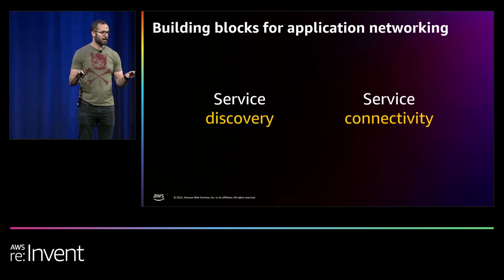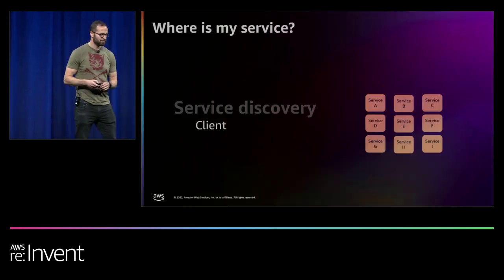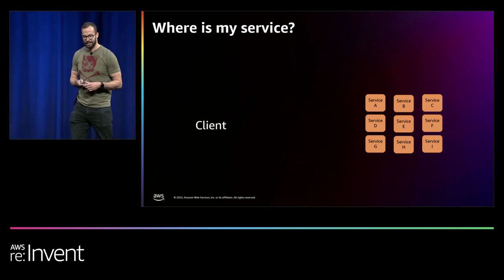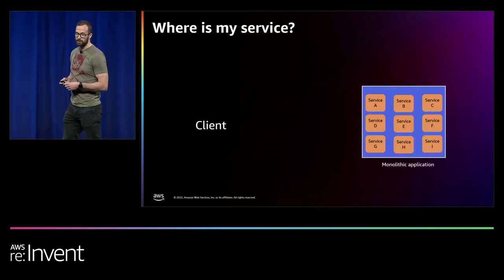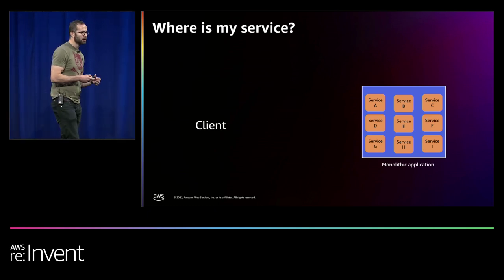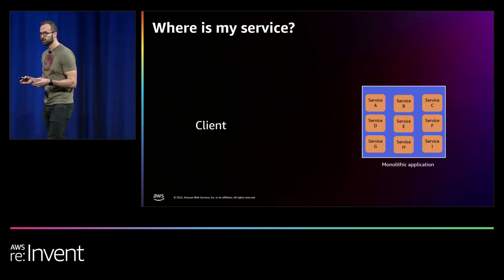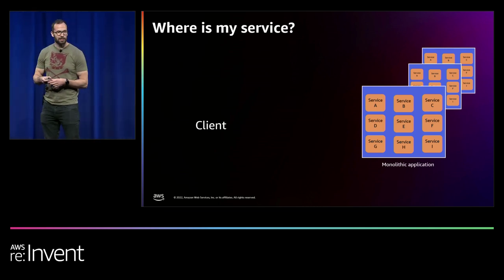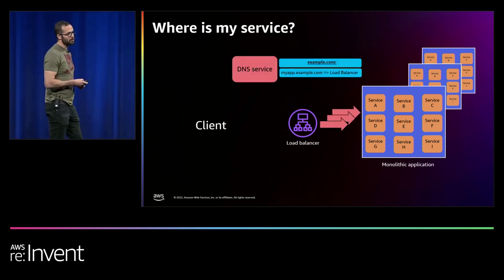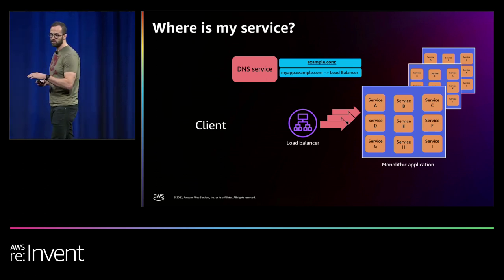If we split our application networking services into two categories, we have service discovery and service connectivity. Service discovery is all about finding where the service you're trying to communicate with lives. The example I'll use is a monolithic application — one running on a single compute with the same runtime, like Java, where all services are effectively different libraries of the same application. If you want to make a change to a single service, you have to redeploy the whole app. Typically, you'd have multiple instantiations for high availability and put a load balancer in front to distribute traffic.